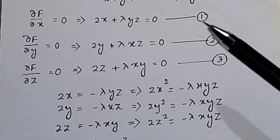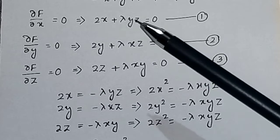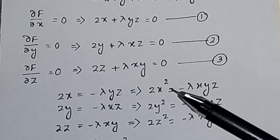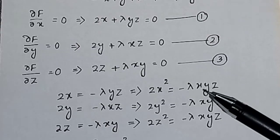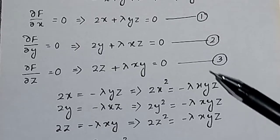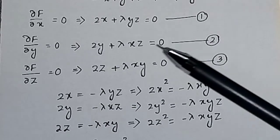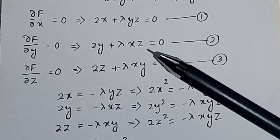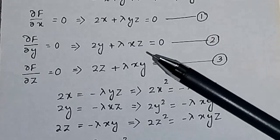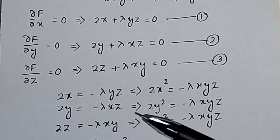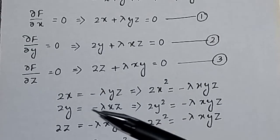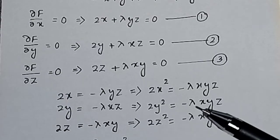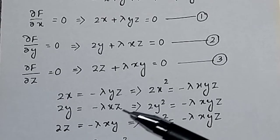From equation 1, we can write 2x = −λyz, so multiplying both sides by x gives 2x² = −λxyz. Similarly, from equation 2, writing 2y = −λxz and multiplying both sides by y gives 2y² = −λxyz.